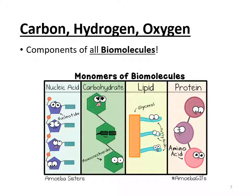Now we're going to go through the chemical requirements. With each of these, you have to ask yourself what a cell would need this chemical for. The first category is CHO — carbon, hydrogen, and oxygen. Put a little star next to the title of this one, because these three are necessary for all cells to build their biomolecules: nucleic acids, carbohydrates, lipids, and proteins. Without carbon, hydrogen, and oxygen, these cannot be made.